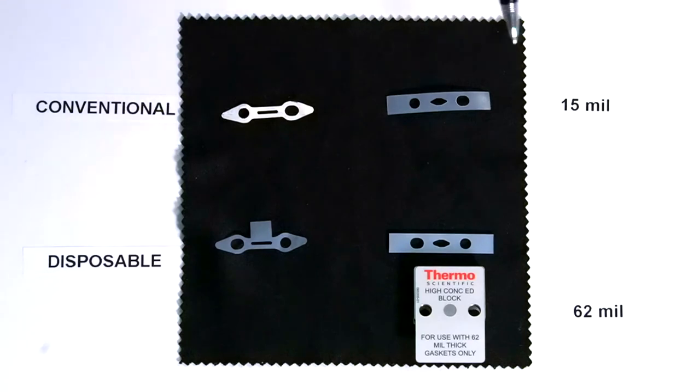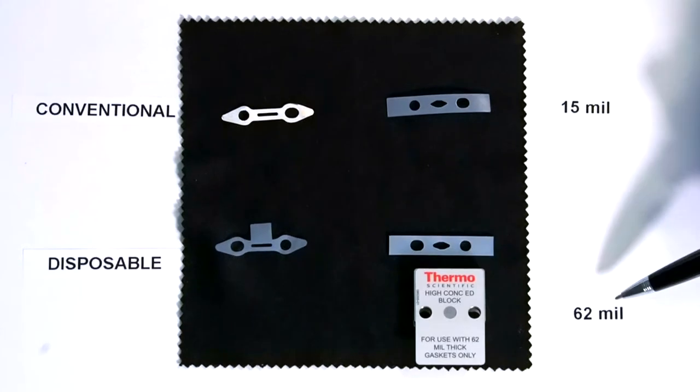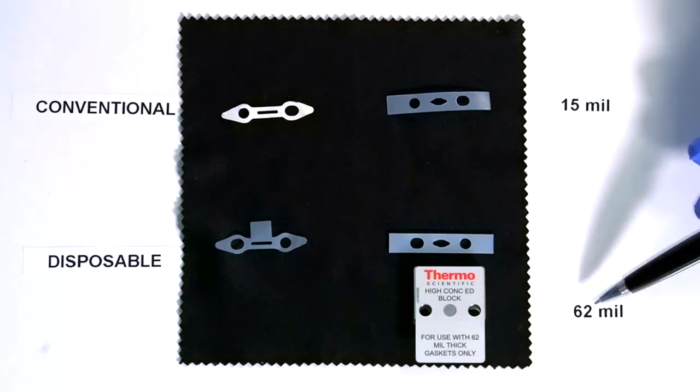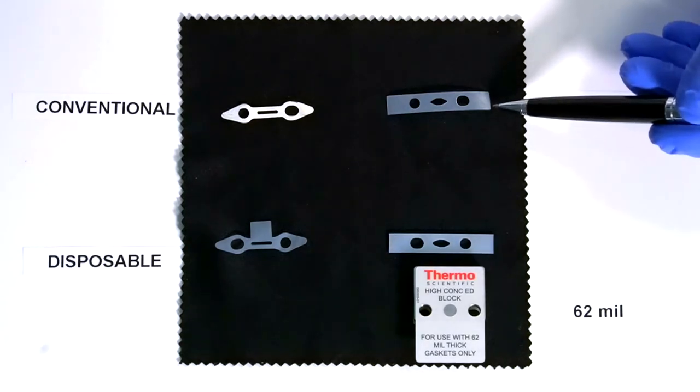You'll see here we have two different gaskets, one that says 15 mil and one that says 62 mil. Mil refers to thousandths of an inch, not millimeters, so it's 15 thousandths and 62 thousandths of an inch, and that's the thickness of the gasket that we're referring to.